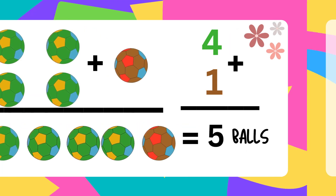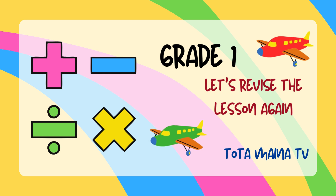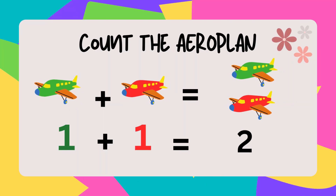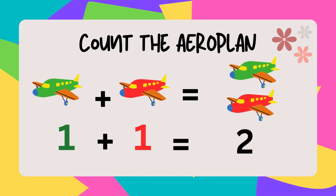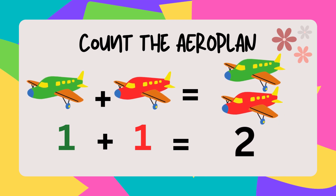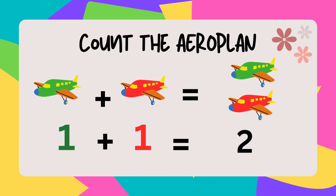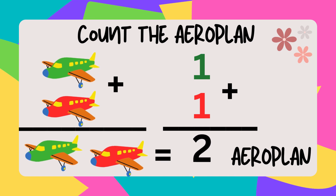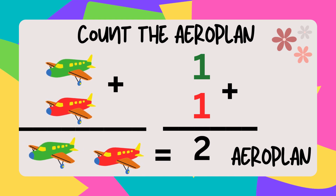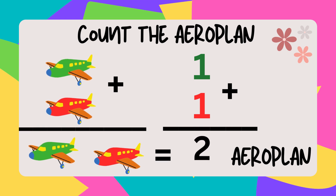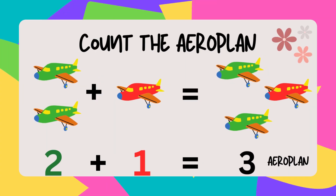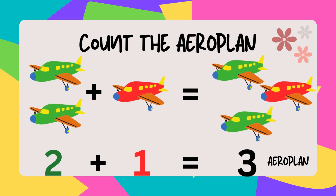Let's revise the lesson again. One green aeroplane plus one red aeroplane. The sum of aeroplanes is two. Two green aeroplanes plus one red aeroplane. The sum of aeroplanes is three.